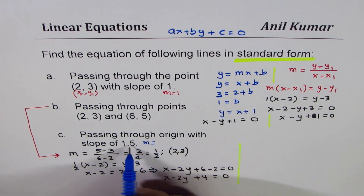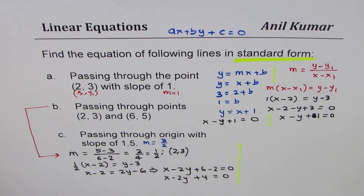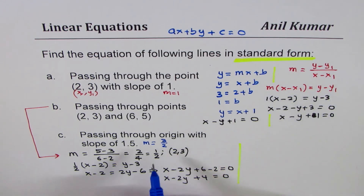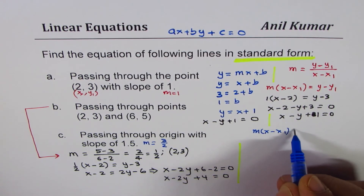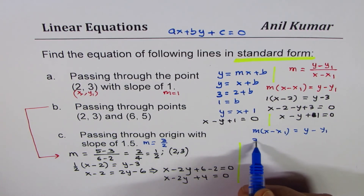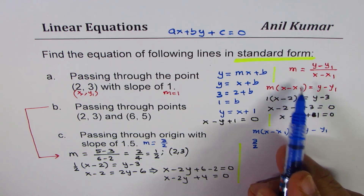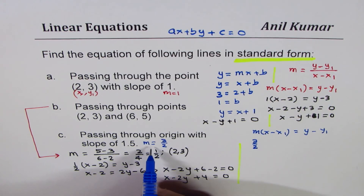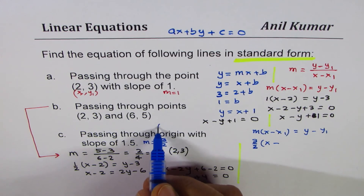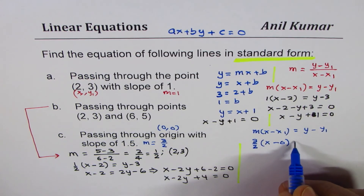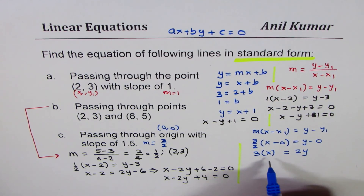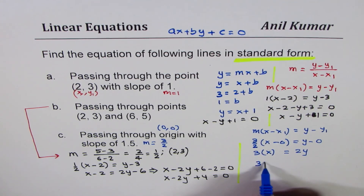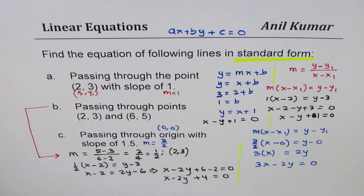Part C: passing through the origin with slope 1.5. Slope M = 1.5 = 3/2. Since the line passes through the origin, the point is (0, 0). Using M(X - X₁) = Y - Y₁: (3/2)(X - 0) = Y - 0. Cross-multiplying gives 3X = 2Y, and bringing terms together: 3X - 2Y = 0. That is the equation in standard form for part C.